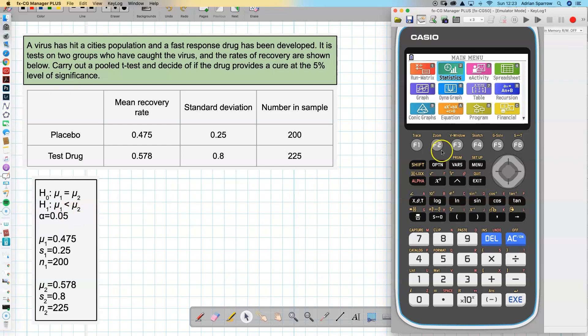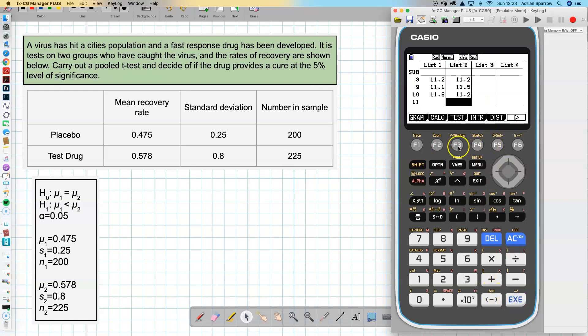I'm going to put all this information into the stat menu. I'm going to go to test, t, and I'm going to choose two-sample rather than the one-sample. Remember in the past we've used that one-sample, but this time we're going to use the two-sample.